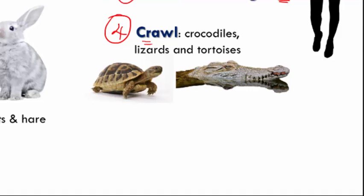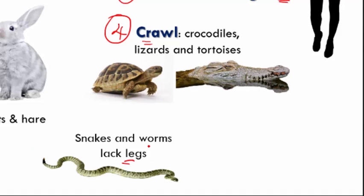We also have animals that don't have limbs at all, such as snakes and worms. Snakes move by curving their body from side to side, while worms move by contracting and expanding their body.